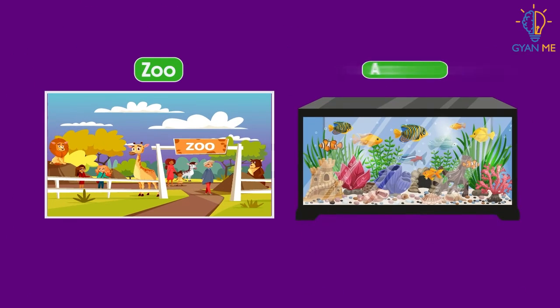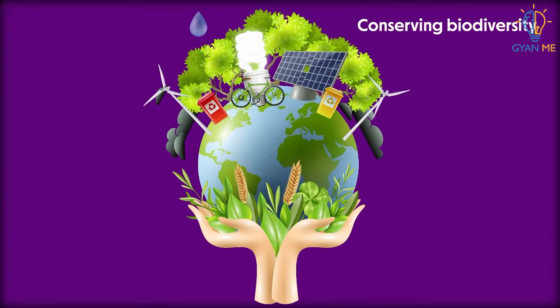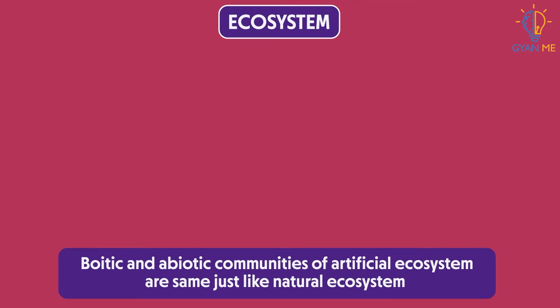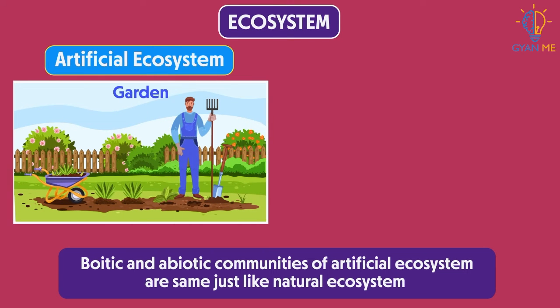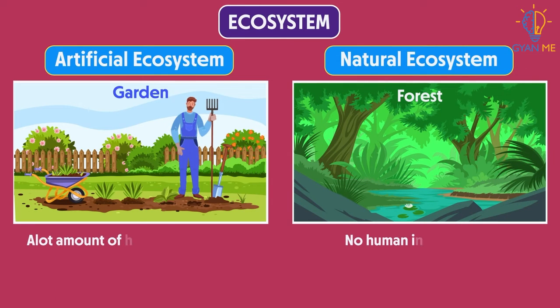Also, zoos, aquariums and botanical gardens which are maintained by humans with the objective of conserving biodiversity are included in artificial ecosystem. Students, note that the biotic and abiotic community of artificial ecosystem are the same just like that of natural ecosystem. The only difference is there is a large amount of human interference in artificial ecosystem, as humans take conscious efforts to maintain it for their benefits.